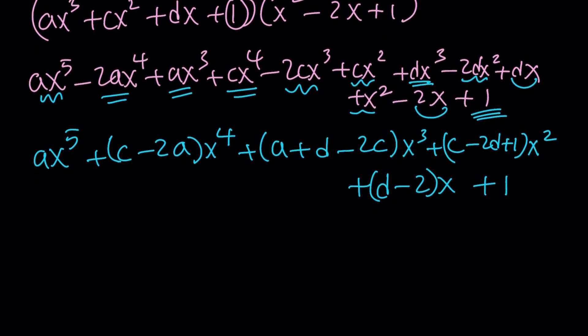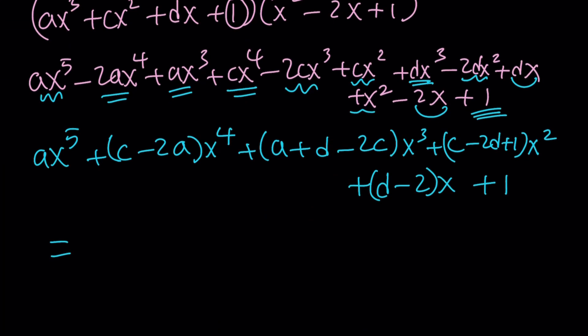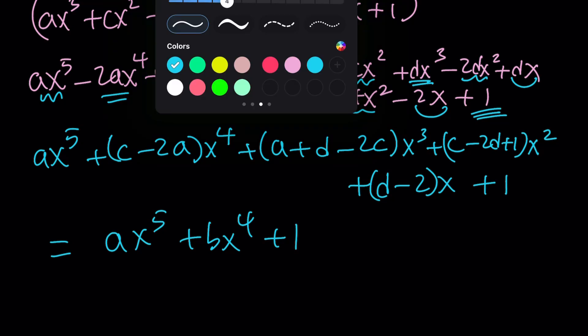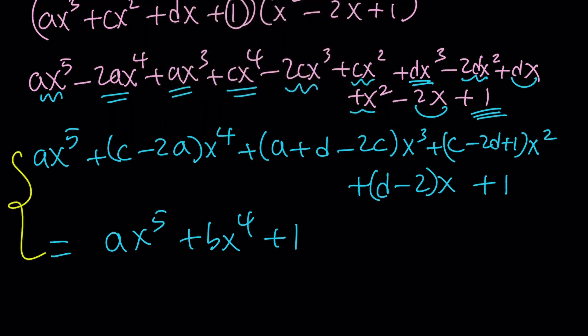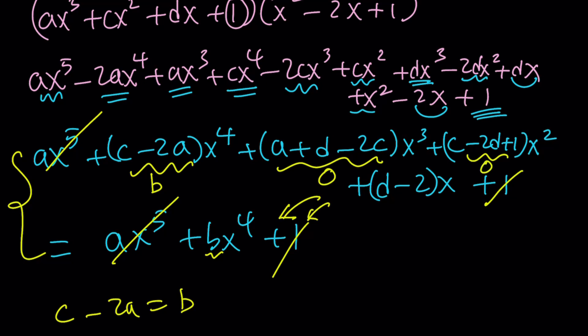Now, I've got to set this equal to my numerator, which is ax to the 5th plus bx to the 4th plus 1. Let's go ahead and take a look at the equality of two polynomials. First of all, these two cancel out. The 1s cancel out. We can totally forget about the constants and focus on everything else. But guess what? A lot of terms should cancel out because I don't have x cubed. I don't have x squared. So the coefficient of x to the 4th is b here.